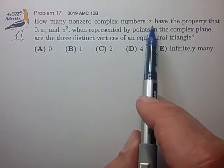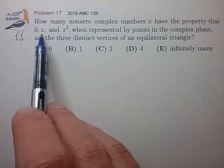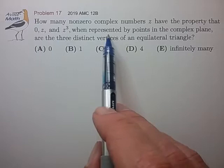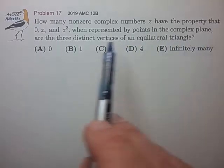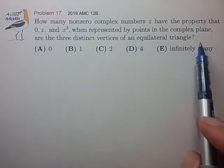How many non-zero complex numbers z have the property that 0, z, and z cubed, when represented by points in the complex plane, are the three distinct vertices of an equilateral triangle?